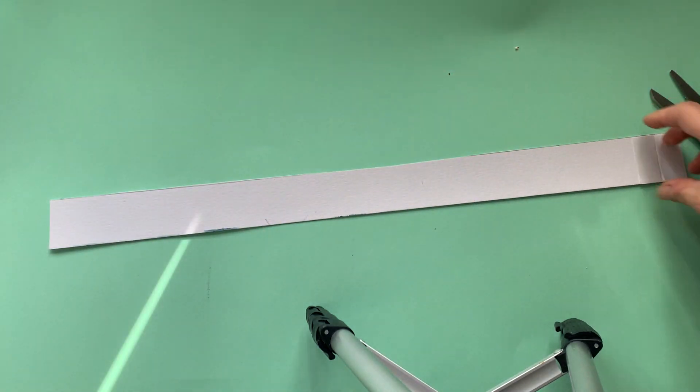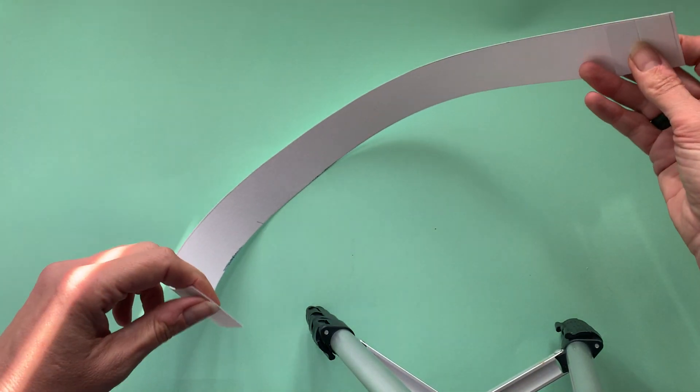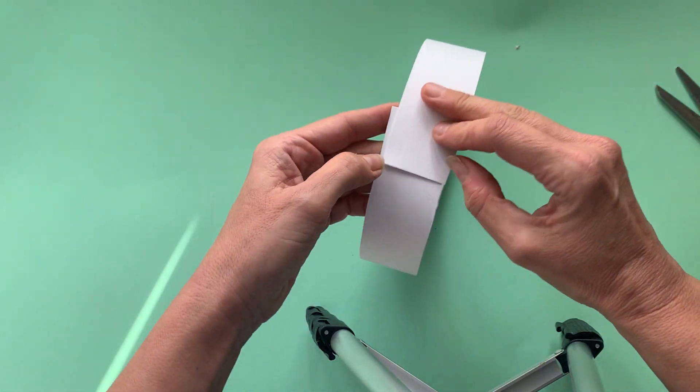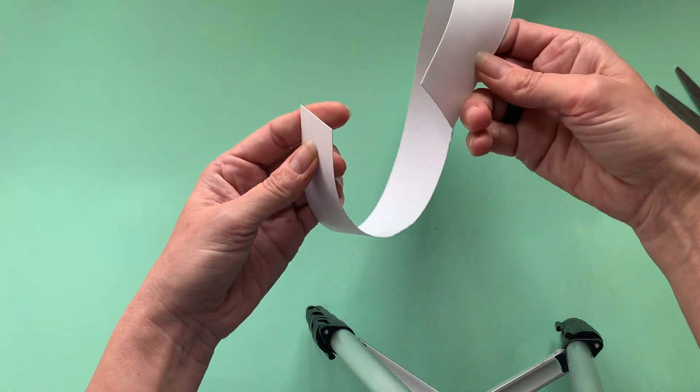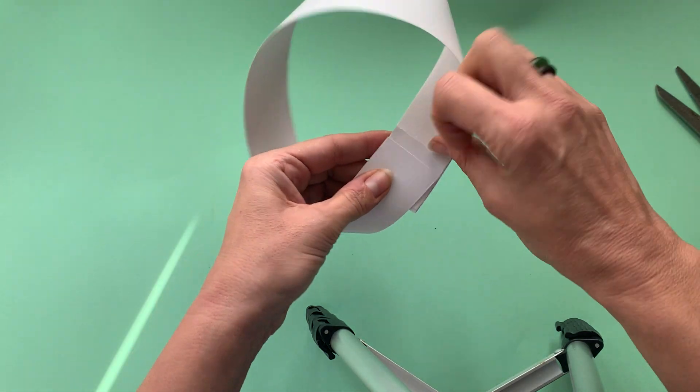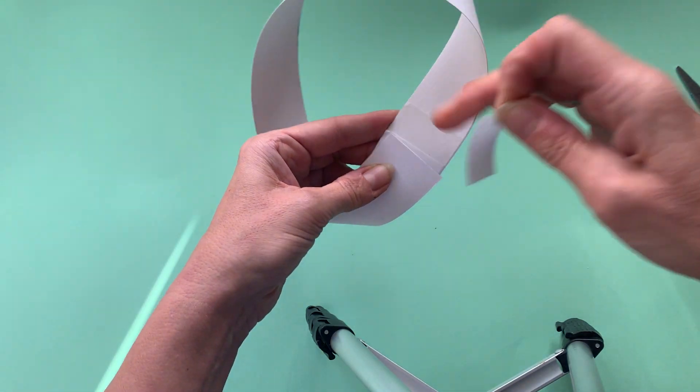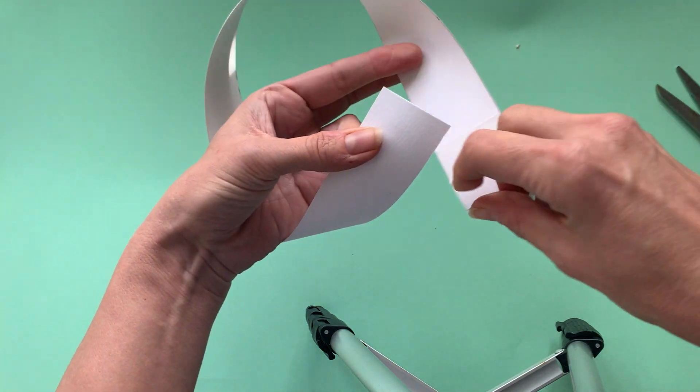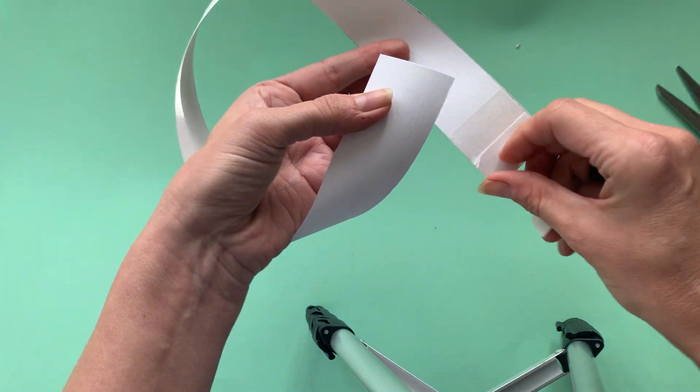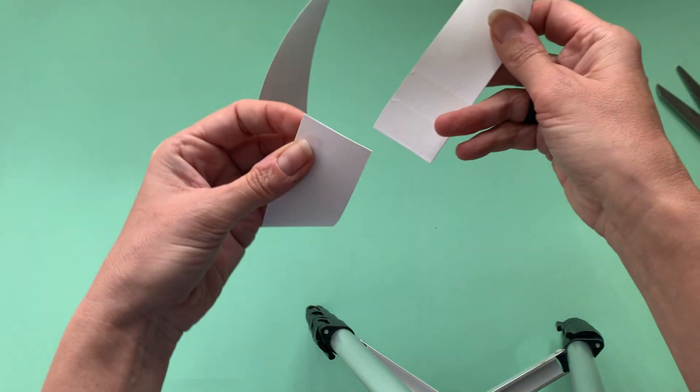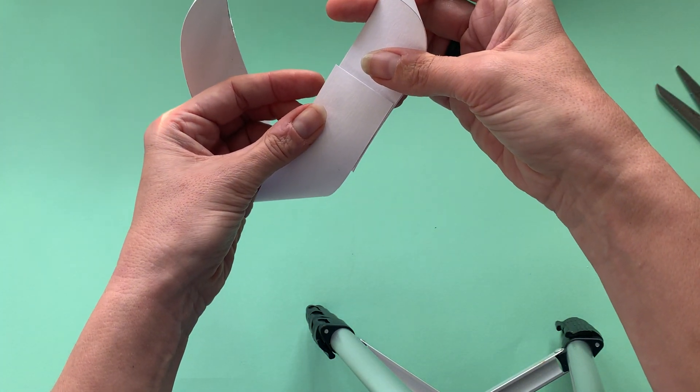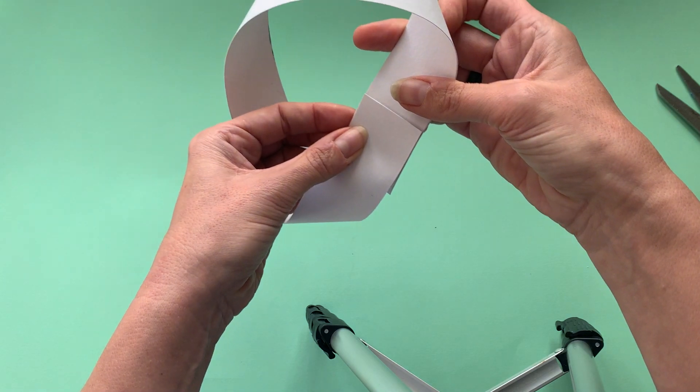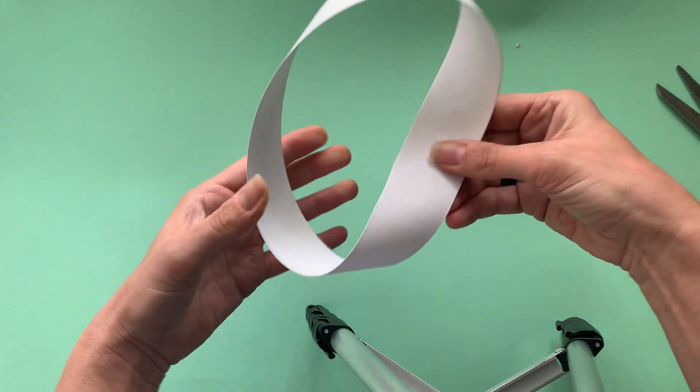Now we're going to do it again. We're going to do a loop in the same way, bending it around like that, but we're going to put a twist in it, which makes it what is called a Mobius strip. Again, I've put tape on so I don't have to wait for the glue to dry.